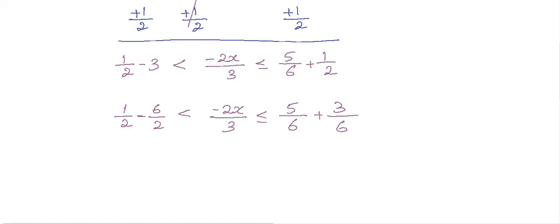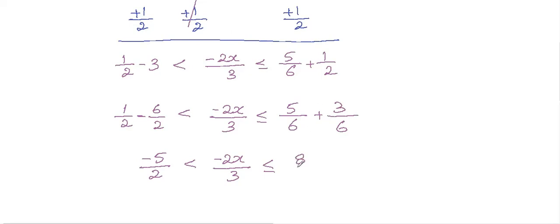Now we have the same denominators, so just add the numerators. That gives us minus five over two, less than minus two X divided by three, less than or equal to five plus three, which is eight over six.